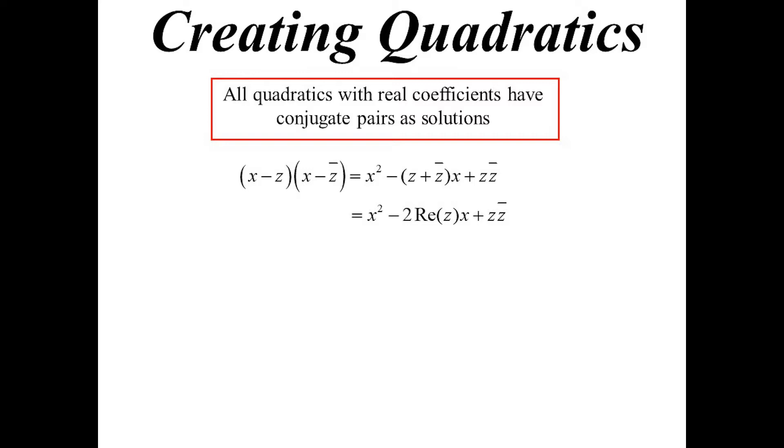So now if I get a question like this, I could go the long way. And the long way would be to write this as, oh well, it's X minus 4 plus i, and X minus 4 minus i. Expand the whole thing out and you'd get the answer.